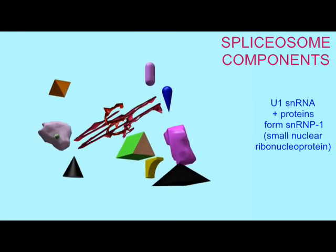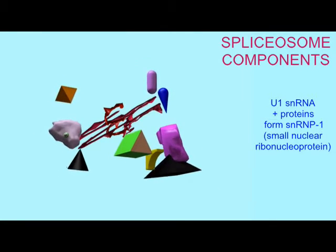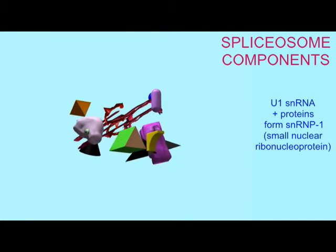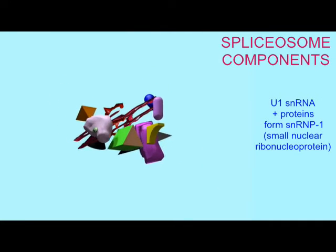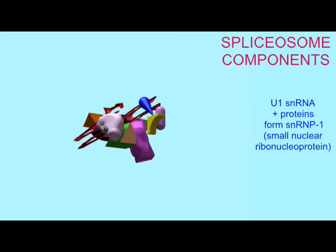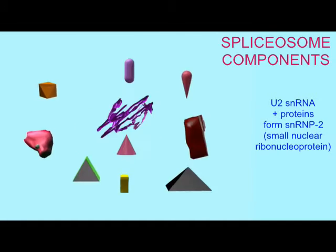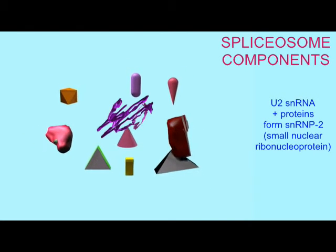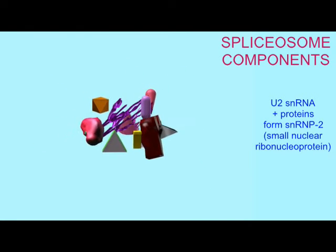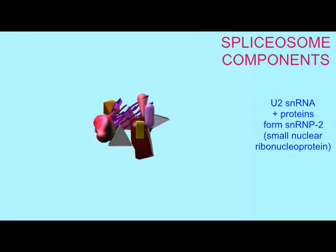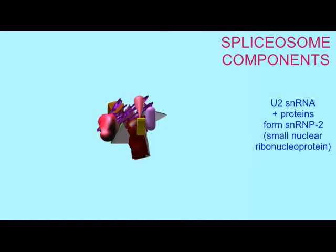The snRNA U1 complexes with a number of proteins to form a snRNP, a small nuclear ribonucleoprotein, which will form part of the spliceosome. The other small nuclear RNAs which form part of the spliceosome also complex with specific proteins.